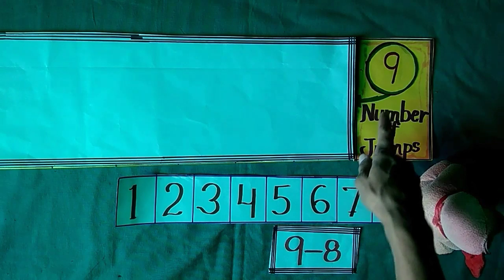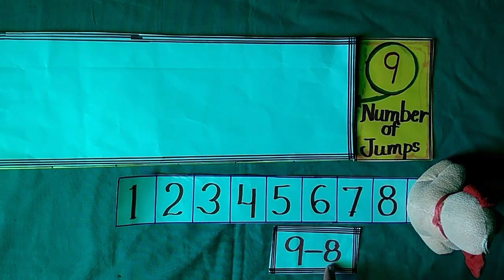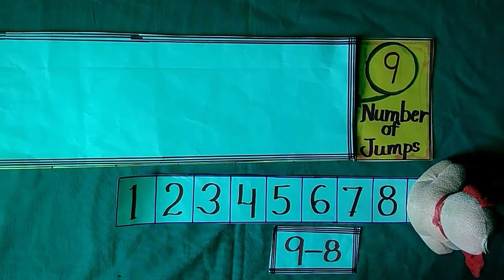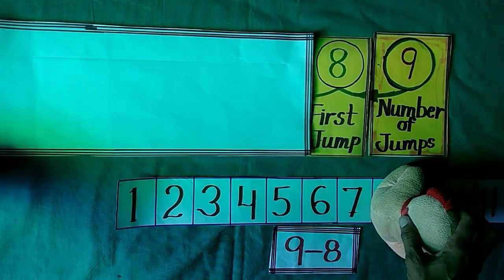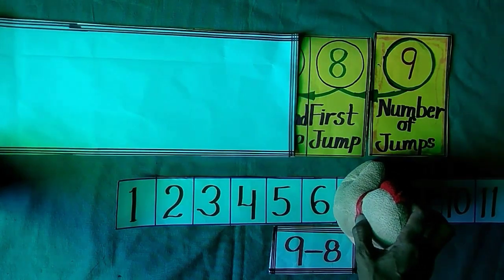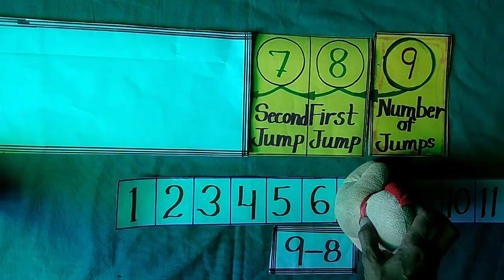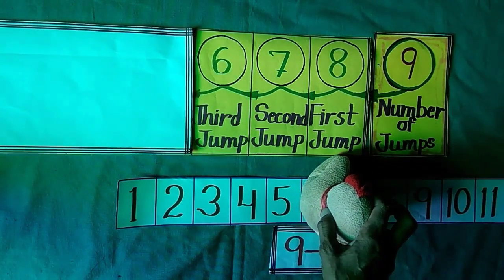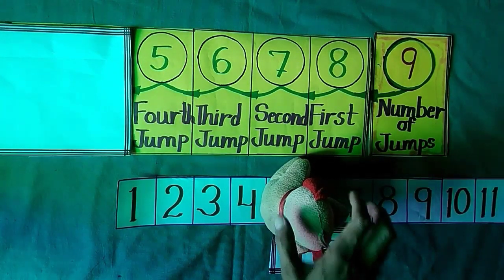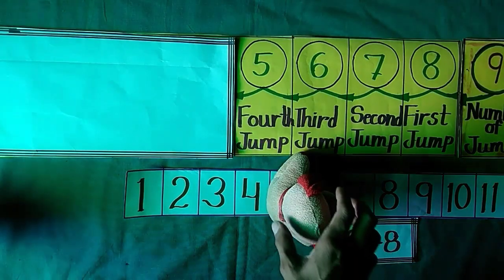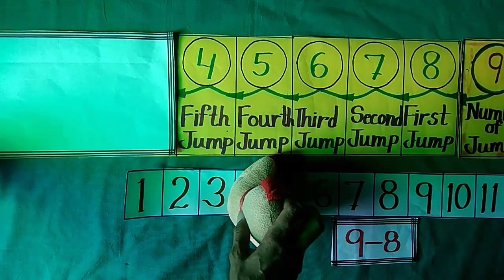Jimmy stands at 9. He wants to take 8 backward jumps. Let us see where he reaches after 8 backward jumps. When Jimmy takes his first backward jump, he reached at 8. After second jump, he reached at 7. With third jump, he reached at 6. When he takes his fourth jump, he reached at 5. With fifth backward jump, he reached at 4.